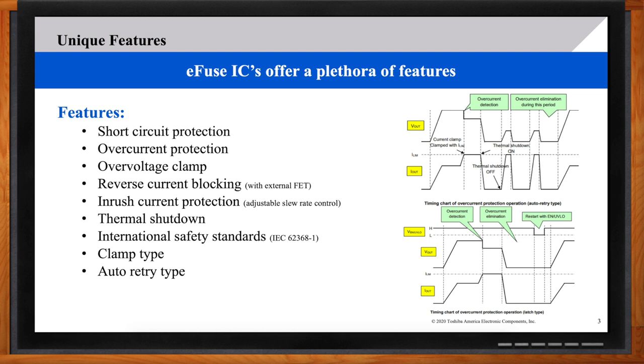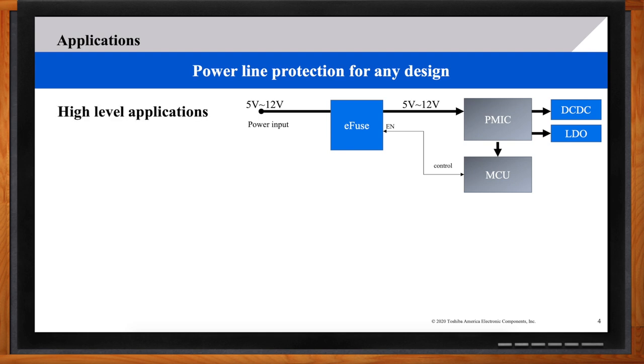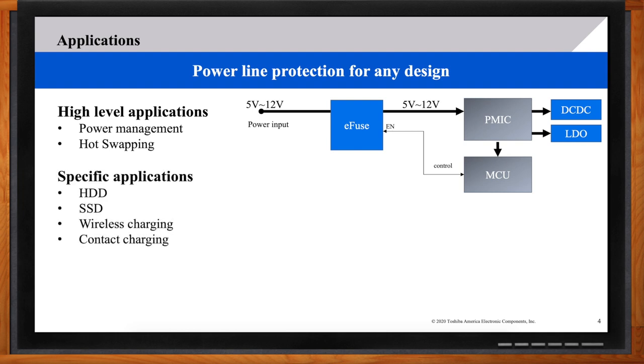Given all these cool features, tell me a little bit about some target applications. For our e-fuse, we're designing it, first and foremost, for power management and hot-swapping applications. And you'll see these being most important in HDDs, SSDs, wireless charging and contact charging, mobile devices that operate in that 4.4 to 18 volt range, and then PMIC power path protection, and wearables.